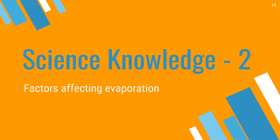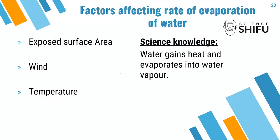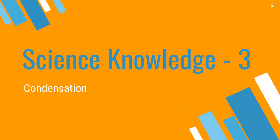Now let's move on to the second science knowledge: the factors affecting the rate of evaporation. There are three main factors in your syllabus — exposed surface area, wind, and temperature. The key science knowledge is that water will always gain heat and evaporate into water vapor. Take note of that phrase: water gains heat and evaporates into water vapor.